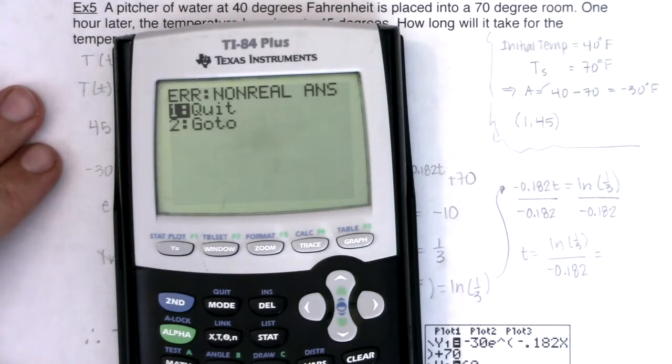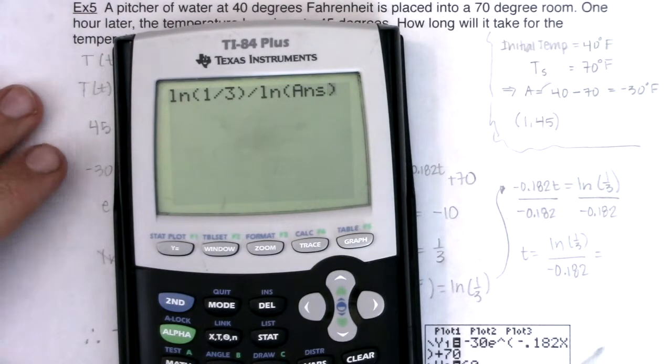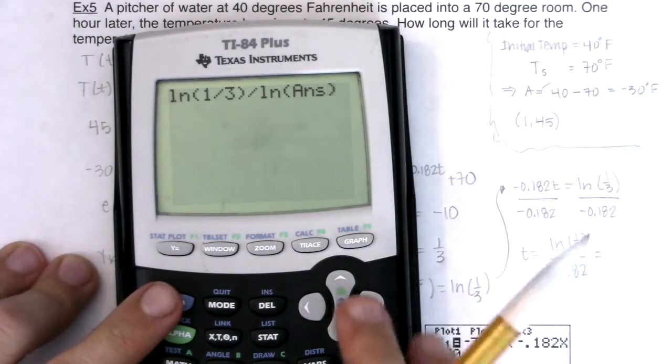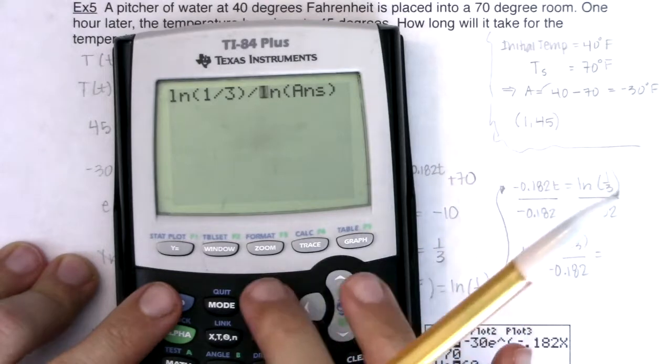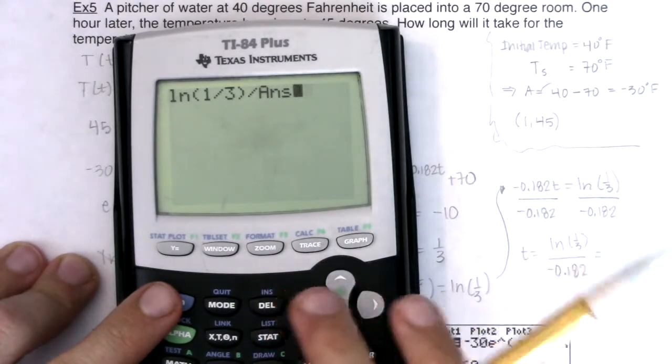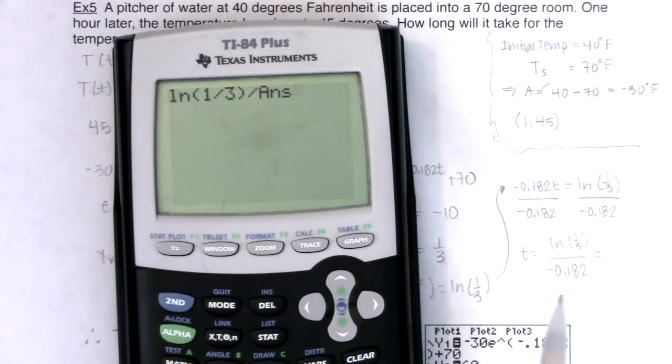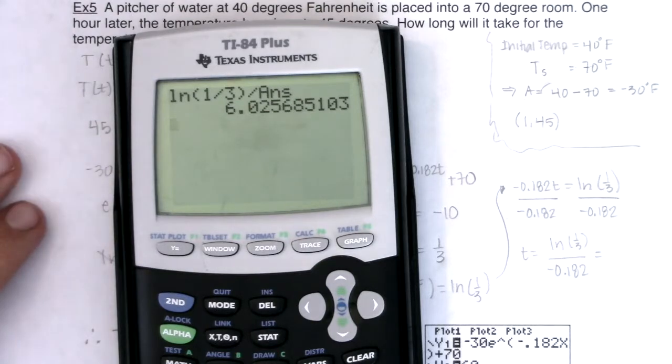When I divide that out, oops, why am I getting a, there must be something off. Oh, I'm sorry. I know what I did. Maybe you're seeing it. It's not the natural log of my answer. It's just my answer. I apologize. Here we go. And the reason I was getting an error is because your calculator is like, hey, you can't take the natural log of a negative number. So as I hit enter, I'm looking at about 6.026 hours.